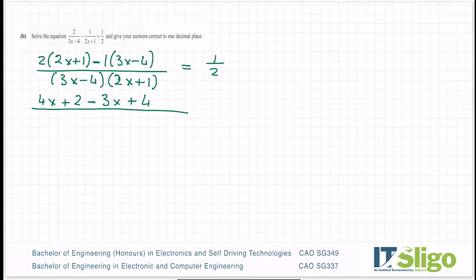And this one we don't drop any bottom lines or anything. So let's multiply out. So 2 by 2x is 4x, 2 by 1 is 2. Minus 1 by 3x is minus 3x plus 4, because minus by minus is a plus. Let's tidy up the top. 4x minus 3x is x. 4 and 2 is 6.